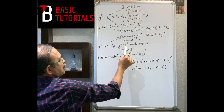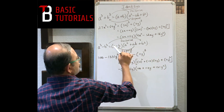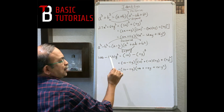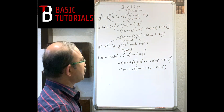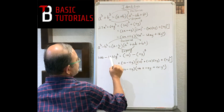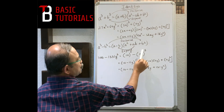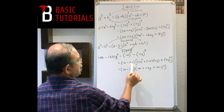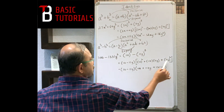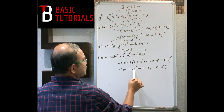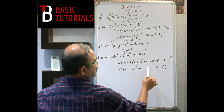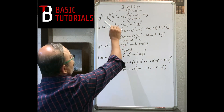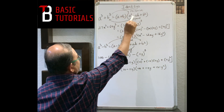For a³-b³: example 1000 - 1331y³. Since 1000 = 10³ and 1331 = 11³, this is (10)³ - (11y)³. Using a³-b³ = (a-b)(a²+ab+b²): (10 - 11y)(100 + 110y + 121y²). You should know perfect cubes from 1 to 10.